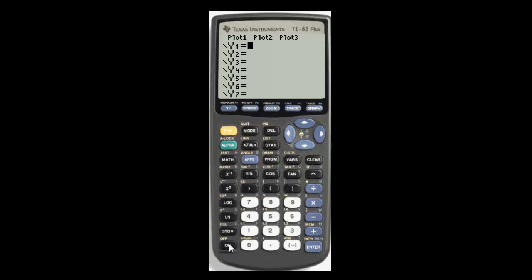Suppose I want to graph y equals one-third x minus 2. Well, to make one-third, all I do is say 1 divided by 3, that's one-third and then x and the calculator knows that means one-third times x and then I'll subtract 2 and hit graph.